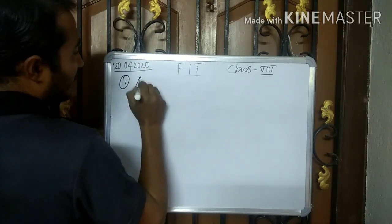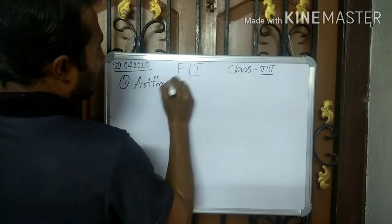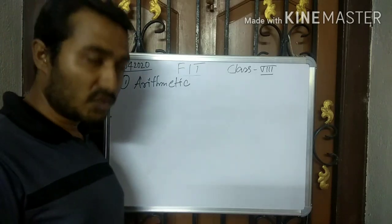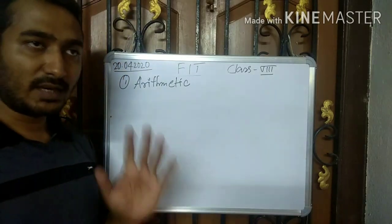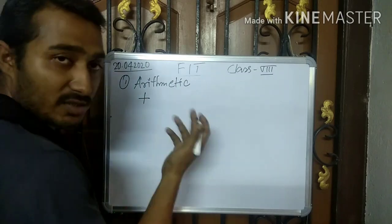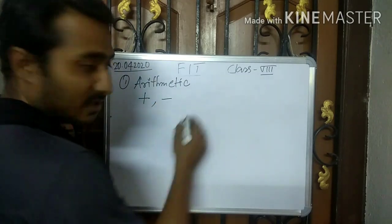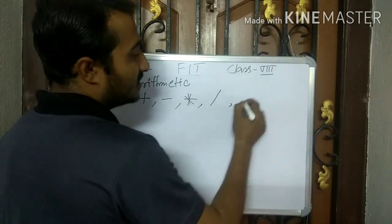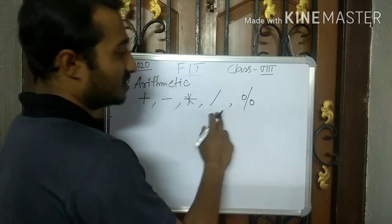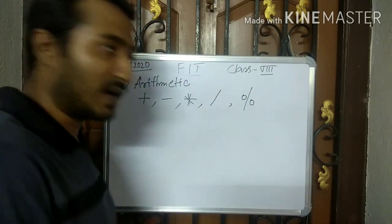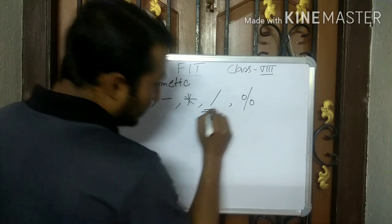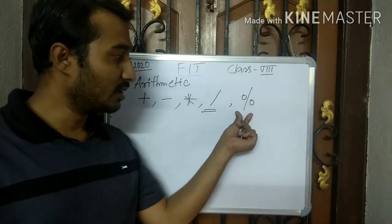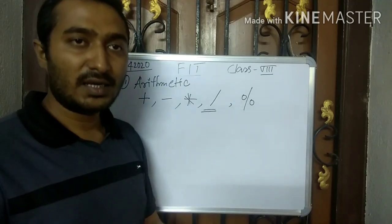The first type is arithmetic operators. What are the arithmetic operators used in C++? There are basically 5 arithmetic operators: plus, minus, multiplication, integer division, and modulo division. Integer division is used to find the quotient in case of a division, and modulo division is used to find the remainder in a division.